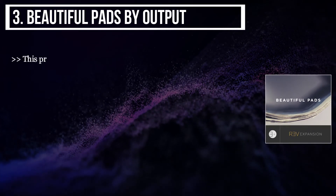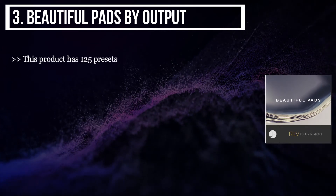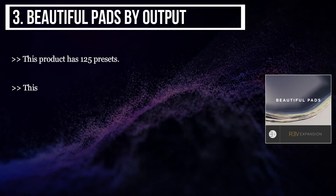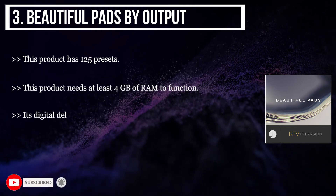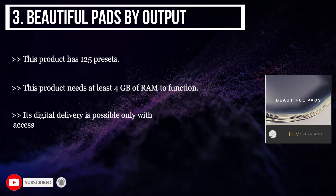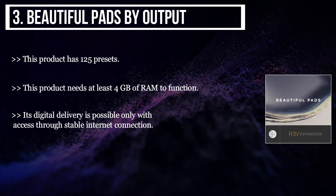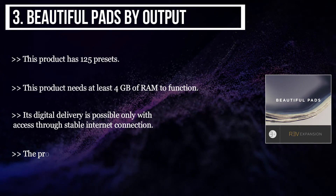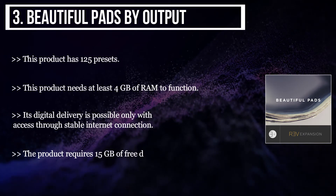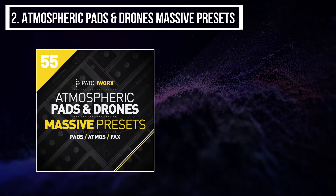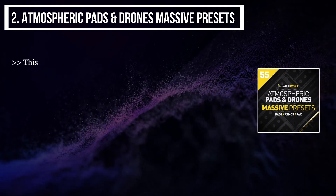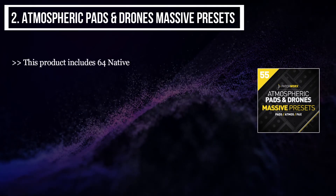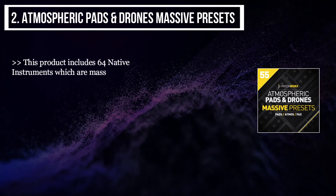The third product we have is Beautiful Pads by Output. This product has 125 presets and needs at least 4 gigabytes of RAM to function. Its digital delivery is possible only with access through a stable internet connection. The product requires 15 gigabytes of free drive space.